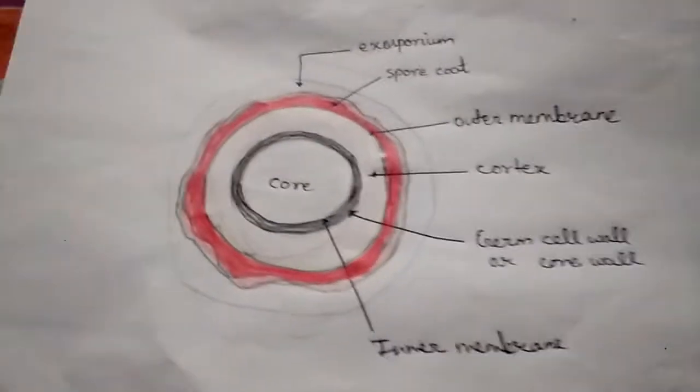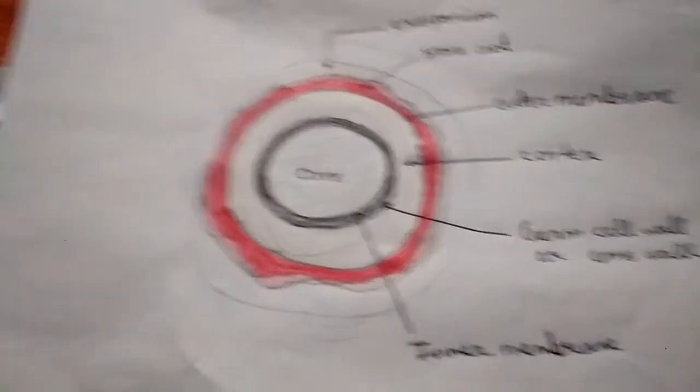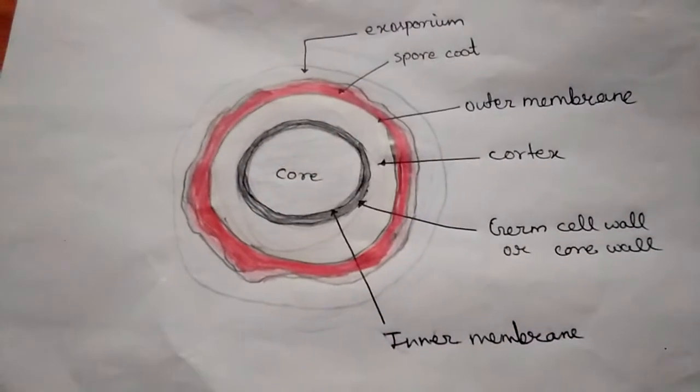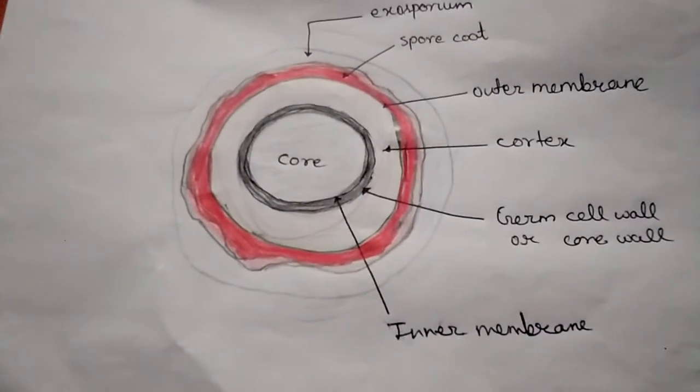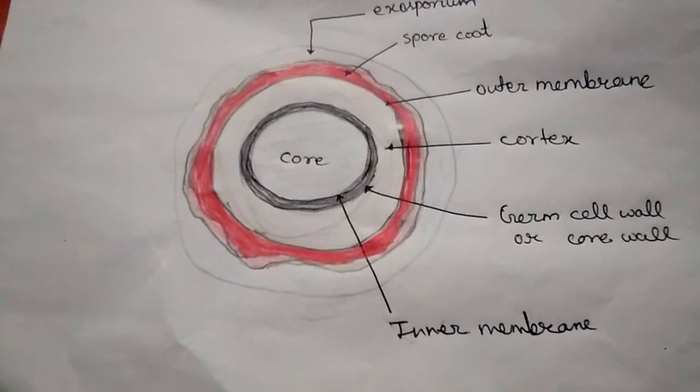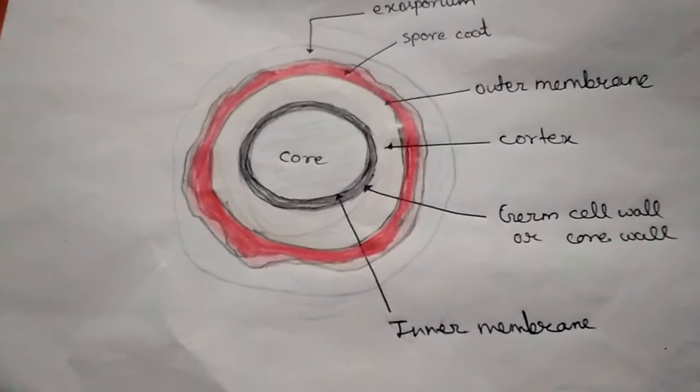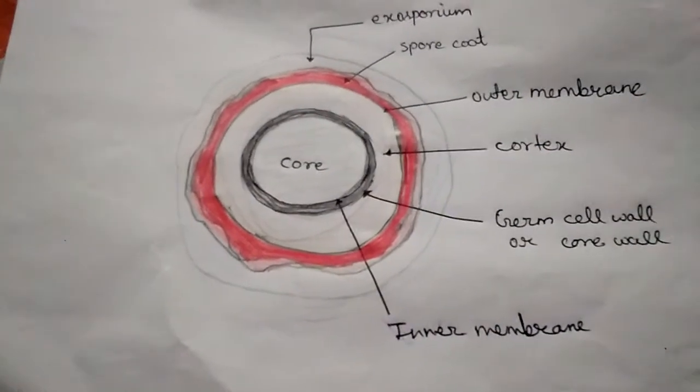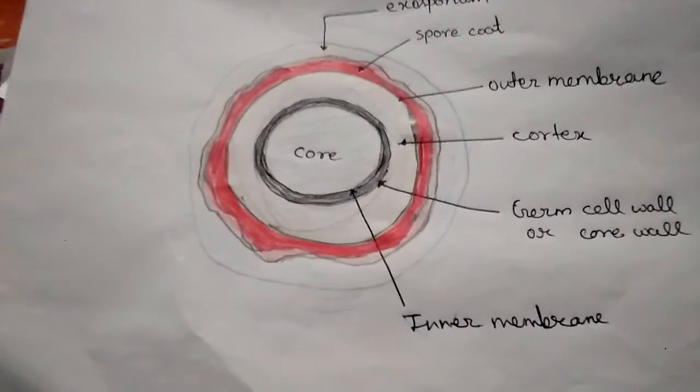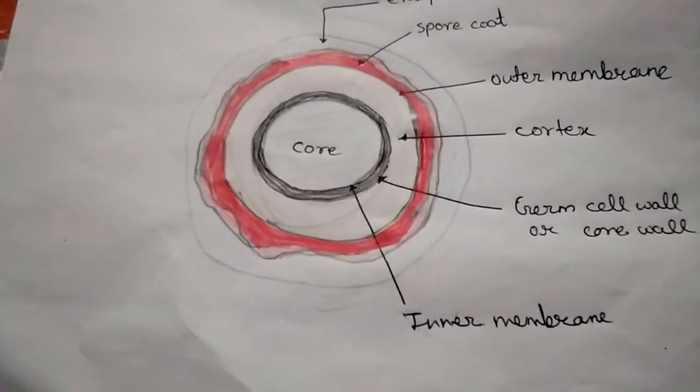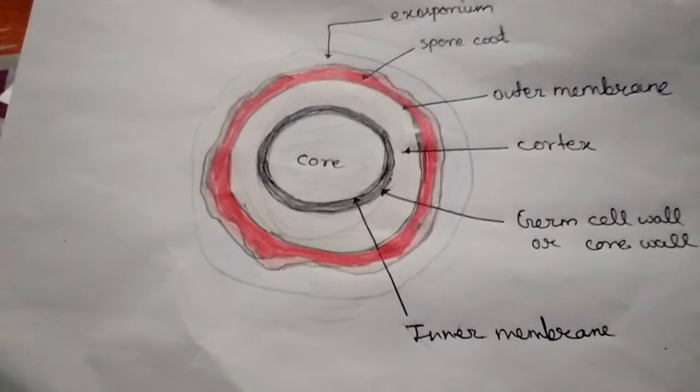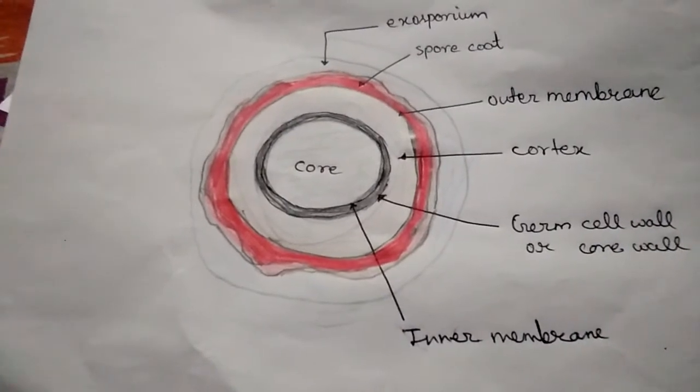It is made only by gram-positive bacteria. Examples are Bacillus and Clostridium. These structures are resistant to environmental stresses such as heat, UV radiation, gamma radiation, chemical disinfectants, and desiccation.